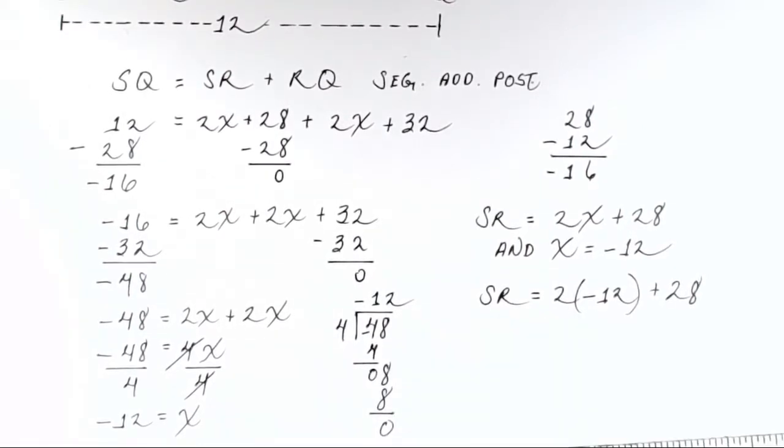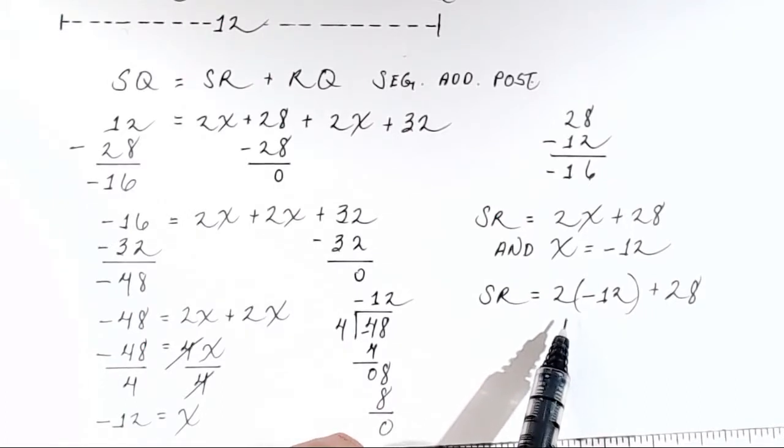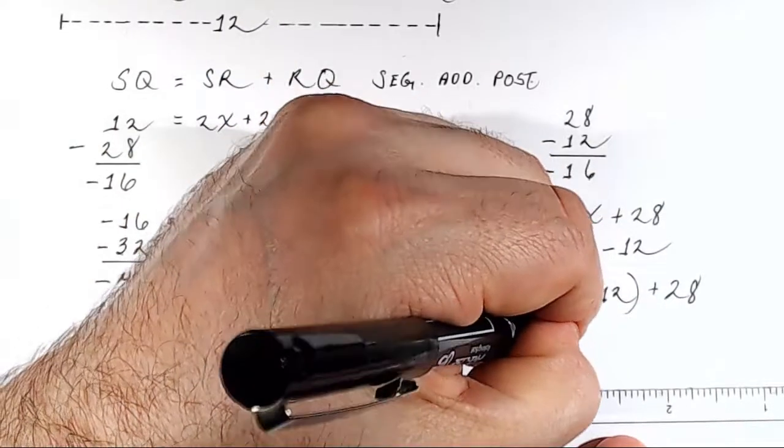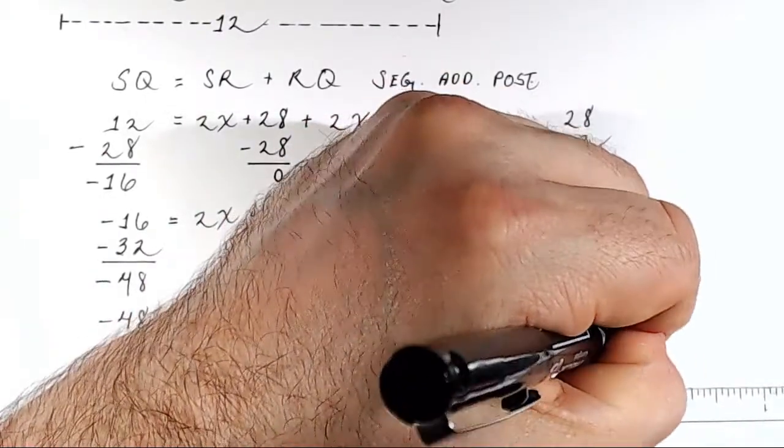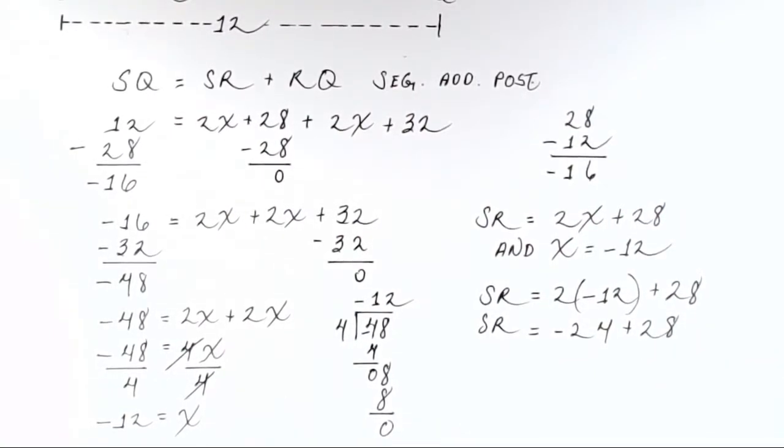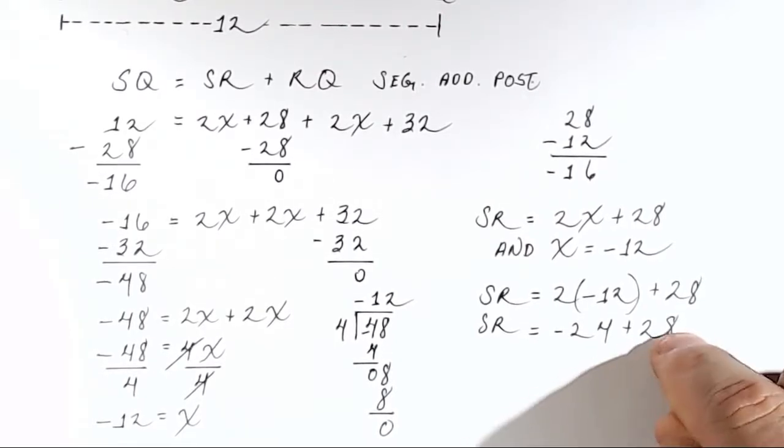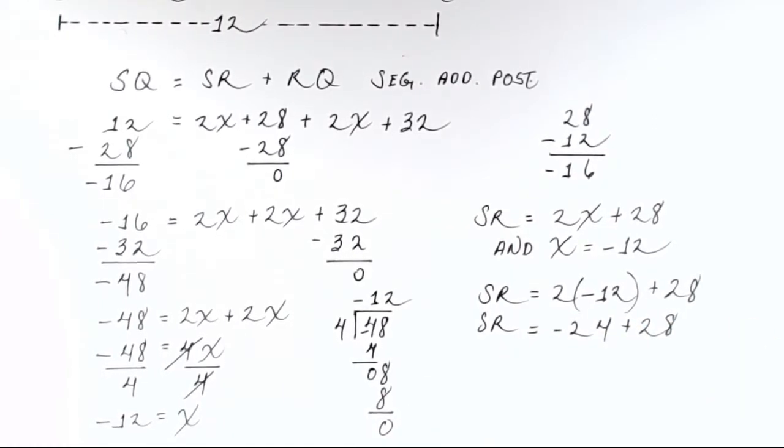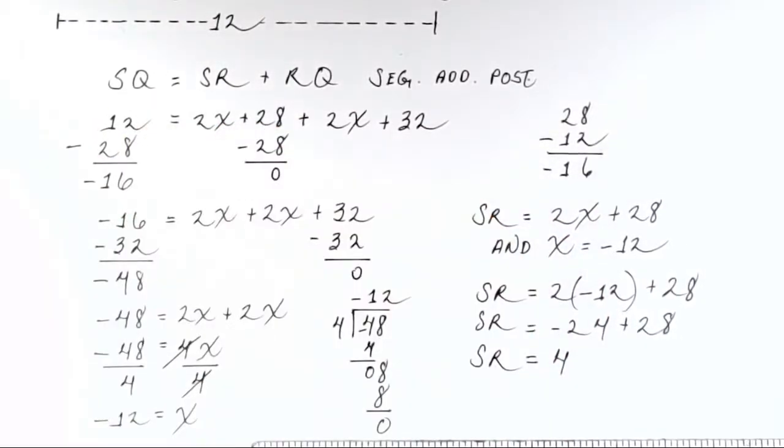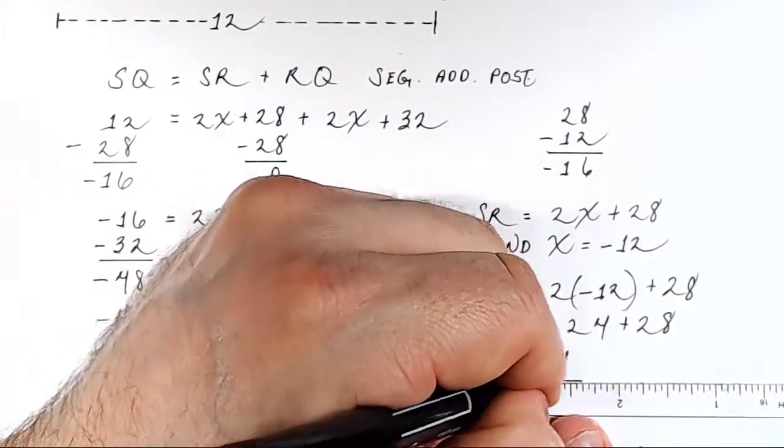All right, so now we just need to follow PEMDAS, parentheses, exponents, multiplication, division, addition, subtraction. Please excuse my dear Aunt Sally. So we need to first do this parentheses. What is negative 12 times 2? Negative 12 times 2 is 24. So we can say SR is equal to negative 24 plus 28. So now we just have to add together negative 24 and positive 28. We know we're going to end up with a positive number because 28 is bigger than the negative number. The positive number is bigger than the negative number, so you're going to end up with a positive number. Negative 24 plus 28 is positive 4. So SR, the distance from S to R, is 4. And that is the value we were seeking.